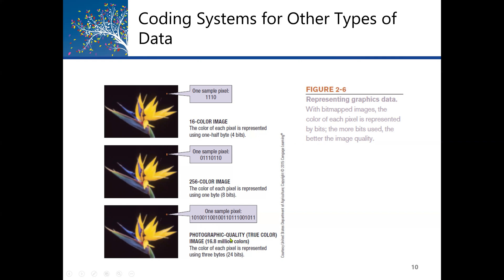Representing graphic data with bitmap images, the color of each pixel is represented by bits. As we can see this image, we can see much difference here. The more bits used, the better the image quality. We see the one with more bits has more different colors, and the image has more quality.